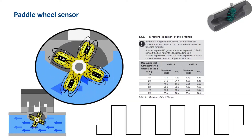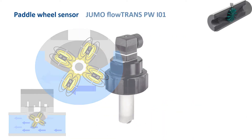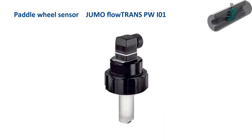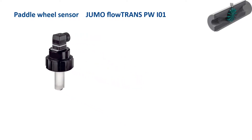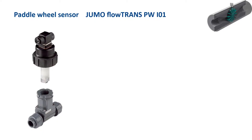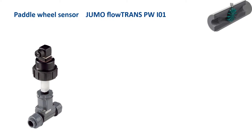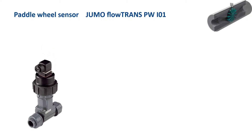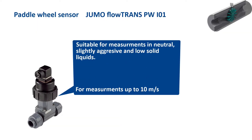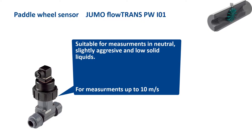The k-factor is related to the pipe cross-section and is specified by the manufacturer in the datasheet. At Jumo, the pedal wheel sensor is called FlowTrans PW. This is a plug-in pedal wheel sensor fastened to the respective process connection — T-pieces, pipe clamps, or welding spigots — by means of a union nut. This allows for quick in-process insertion or replacement, making installation and maintenance easier. It is suitable for flow measurement in neutral, slightly aggressive and low solid media and can measure flow velocities up to 10 meters per second.